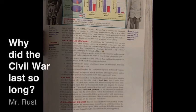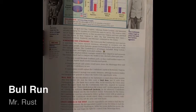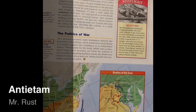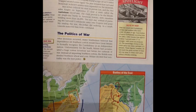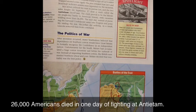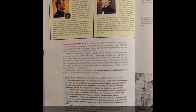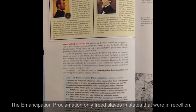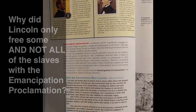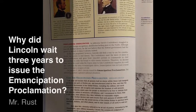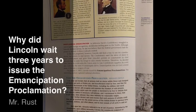Despite all the Union's advantages, the early years of the war were a disaster for Lincoln and his generals. On page 169, you'll see a section on Bull Run, the first battle of the Civil War and a victory for the South. On page 171, you'll see one of the most important battles in American history — the Battle of Antietam, the bloodiest single-day battle in American history with casualties totaling more than 26,000. The Emancipation Proclamation is one of the most important documents in American history, though it only freed slaves in states that were in rebellion, and we must ask why Lincoln waited so long before issuing it.